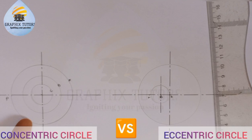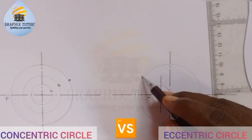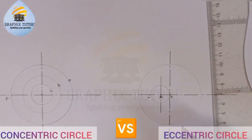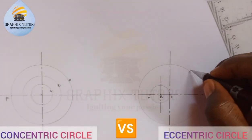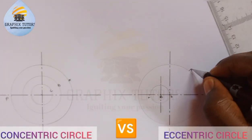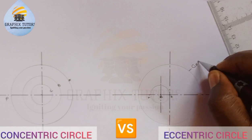They are on the same plane. So this is a concentric circle and this is an eccentric circle. Now there's something I would like you to understand: the external part of the circle is called the circumference.